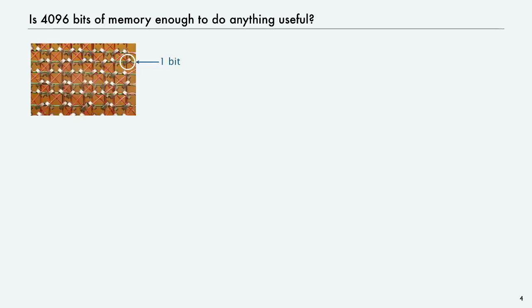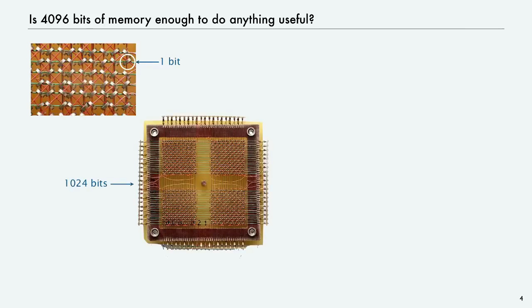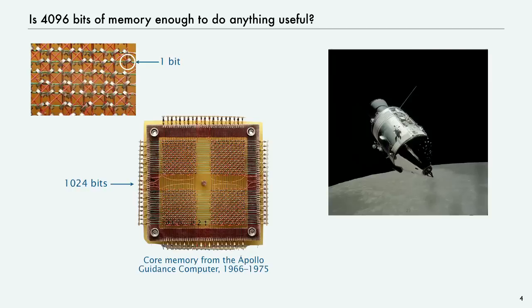In those days, every bit was a physical piece of metal. It had three wires running through it. So 1,000 bits was something that was difficult and expensive to produce. But this is an actual 1,000-bit memory. If you had four of those, you'd have 4,000 bits of memory. Is that enough to do anything useful? Well, actually it is because this thing is the memory from the Apollo guidance computer that got men to the moon and back.